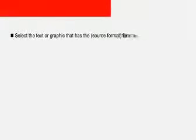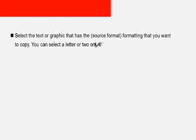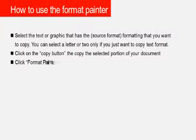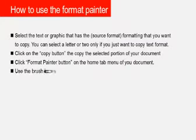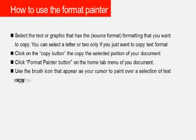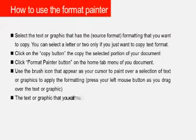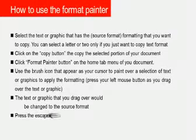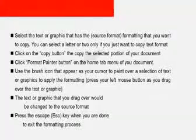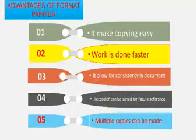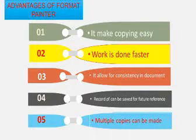To use the format painter, first select the text or graphic that has the formatting you want to copy. Go to the format button and click on it. Come back to the text you want to change — you'll see an icon that looks like a brush. Drag it over the text and it will change to match the original formatted document. To exit, just press the Escape key and you are done.